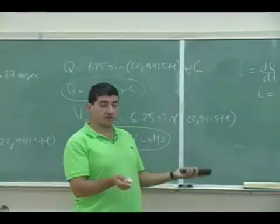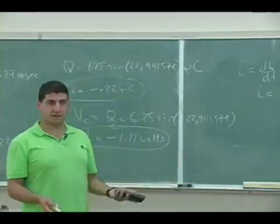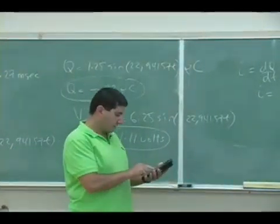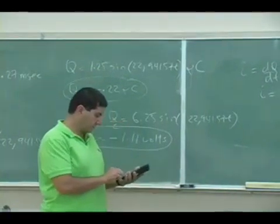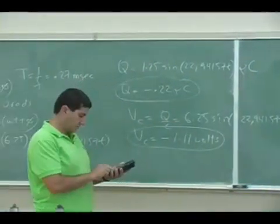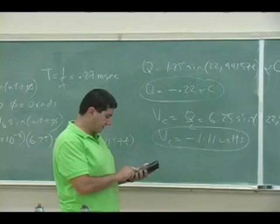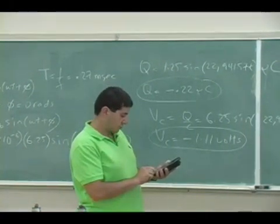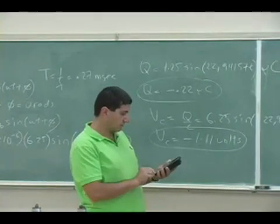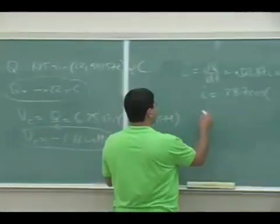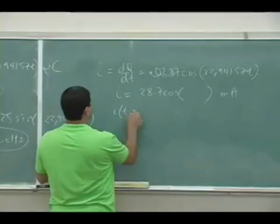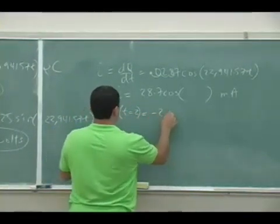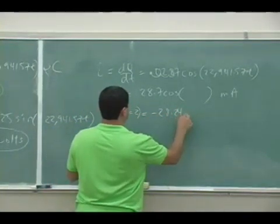And if I want to know what is the current in two seconds, I can take the cosine of that again, cosine of 22,941.57 times 2 times 28.7. So it's going to be I at t equals 2 is going to be negative 28.24 milliamps.